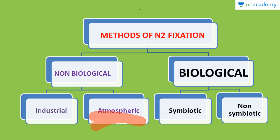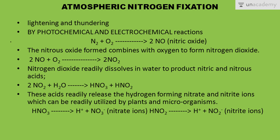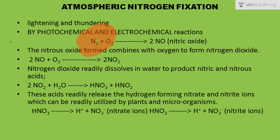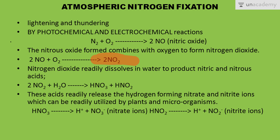In atmospheric nitrogen fixation, the process takes place in the presence of phenomena like lightning and thundering. Through photochemical and electrochemical reactions, dinitrogen combines with oxygen to form NO (nitric oxide), which further combines with oxygen to give NO₂ (nitrogen dioxide).